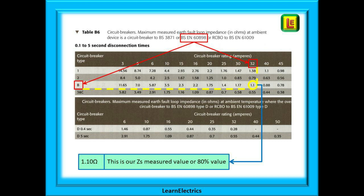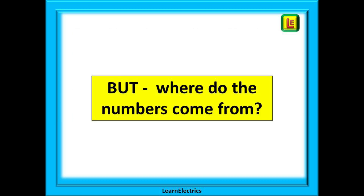What else does the table tell us? At the top it tells us it is a maximum measured value — in other words, after measuring the actual ZS with your meter you can make a direct comparison to the tables. This figure has already been adjusted for voltage fluctuations and temperature variations, as we shall see in just a moment. If the reading on your meter is less than the values shown on the chart then that is an acceptable reading. But where do these numbers come from? They are not just plucked out of the air, so let's start from the beginning.